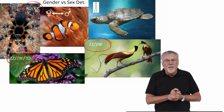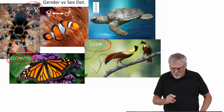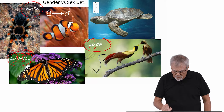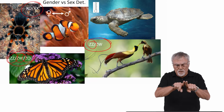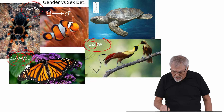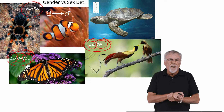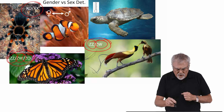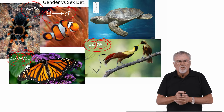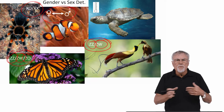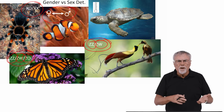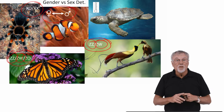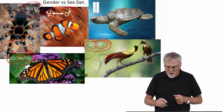In birds, the males are the homogametic sex — they get two identical chromosomes — and the females are the heterogametic sex, getting two different chromosomes. Clownfish can change sex. They can go from being a female to a male, or a male to a female, depending upon the environment they're in and the sexual competition they're encountering.